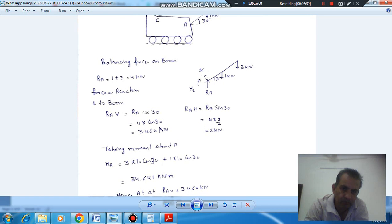So if we take moment about A, then we can find out MR also. MR is 3 into 10 cos 30. So MR will be 3 into 10, where 10 is the length and this is the horizontal or vertical distance at this point which is loaded. So this is 3 into 10 cos 30 and this is 1 into 10 cos 30.